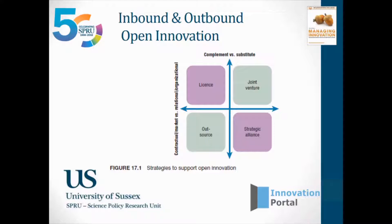So we're going to look at supply linkages, outsourcing — not quite the same thing, but a similar sort of logic. And we'll look at different forms of relational collaboration, and we'll try to make a distinction between alliances and joint ventures, because how you manage them is subtly different. We're trying to be a little bit more specific about what flavour of open innovation we're trying to manage here.